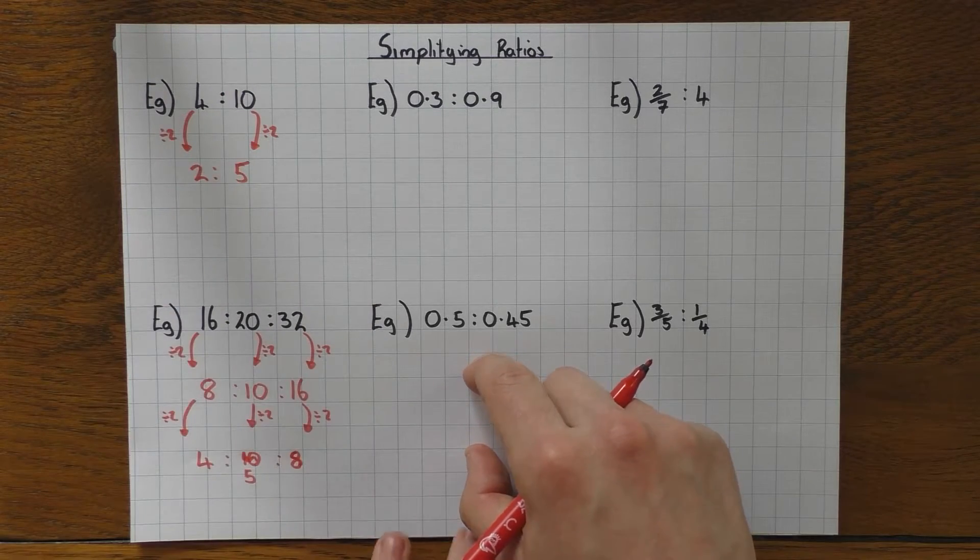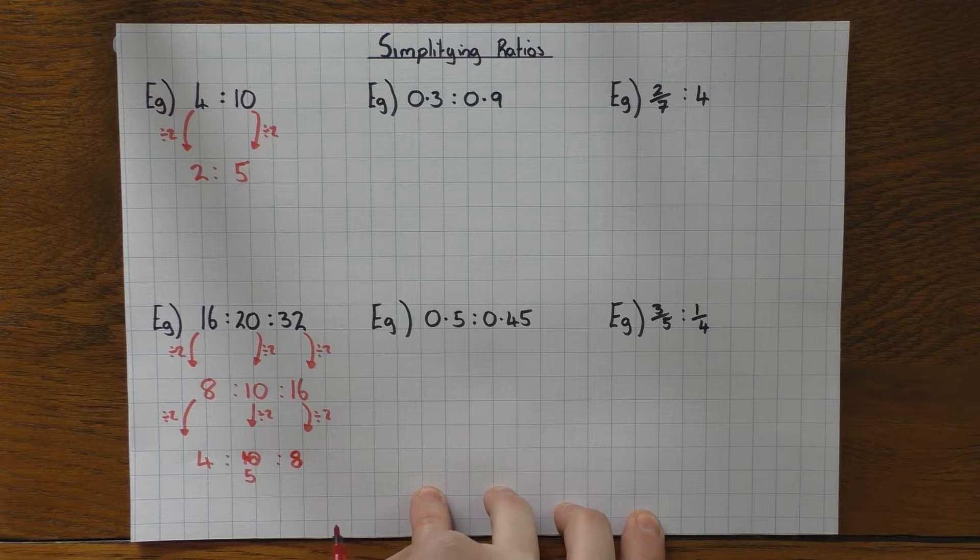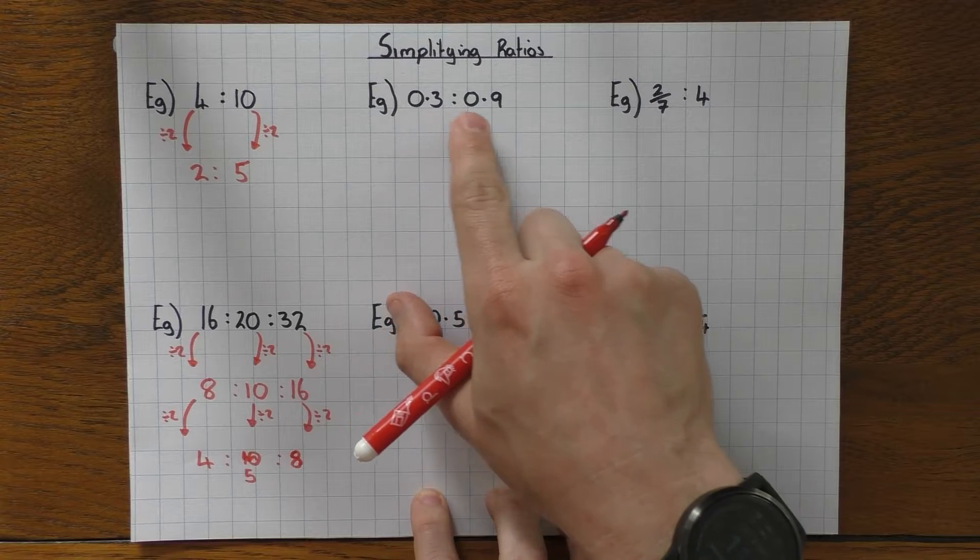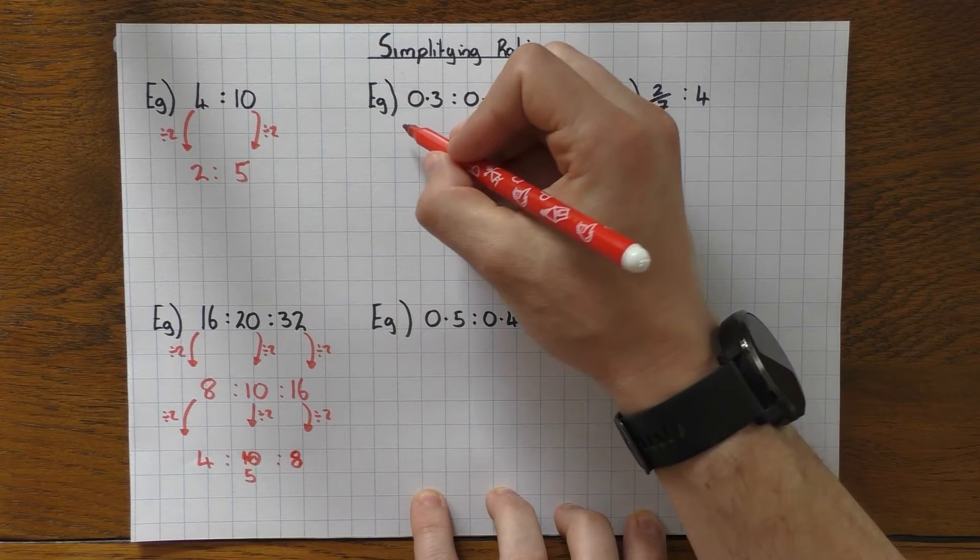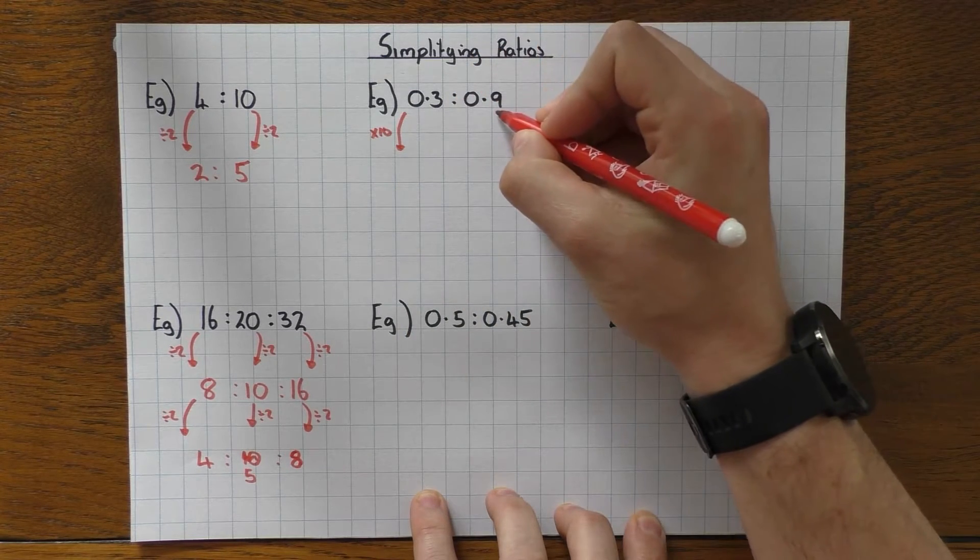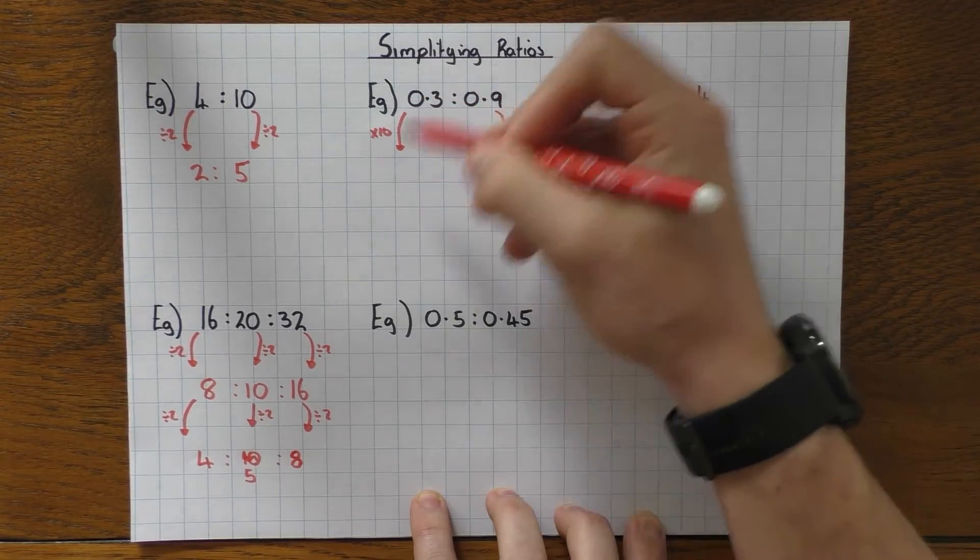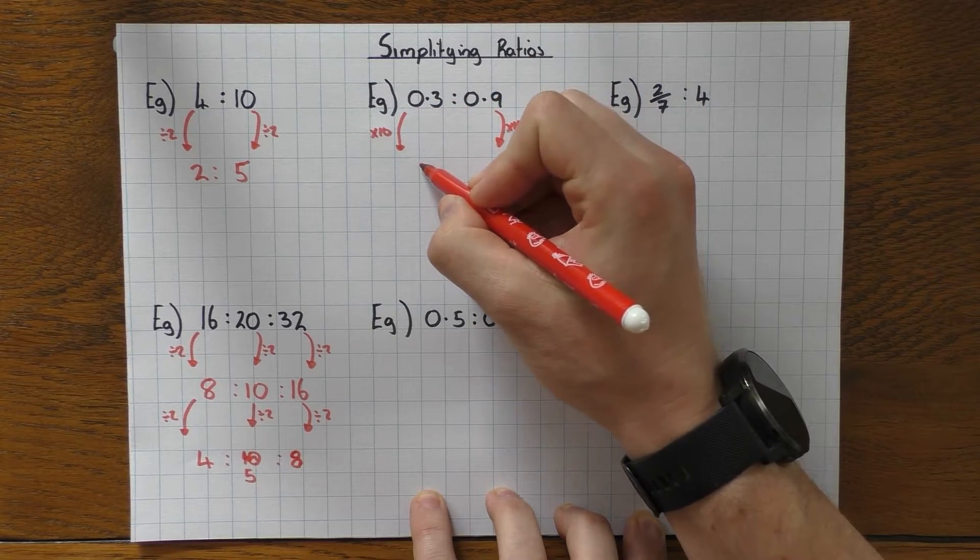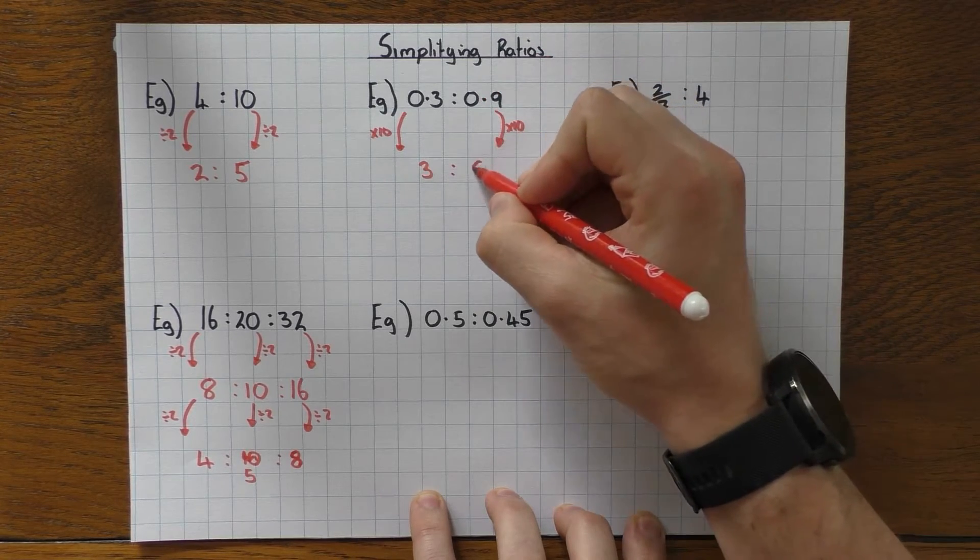So they're the nice simple ones. What happens when we get to decimals? Now the best thing to do when you have decimals is to make them into whole numbers. So the best way to do that in this case, if you've got 0.3 and 0.9, if you times them both by 10, you'll have 3 and 9. So let's do that. So we've got one decimal place, so I'm timesing them by 10. If I times both of them by 10, whatever you do to 1, you must do to the other, by the way. Otherwise you get into a bit of trouble. So 0.3 times 10 is 3. Just move that decimal place over. 0.9 times 10 is 9.